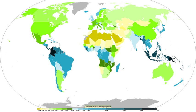The Mediterranean climate regime resembles the climate of the Mediterranean basin, parts of western North America, parts of western and South Australia, southwestern South Africa, and parts of central Chile. The climate is characterized by hot, dry summers and cool, wet winters. A steppe is a dry grassland. Subarctic climates are cold with continuous permafrost and little precipitation.